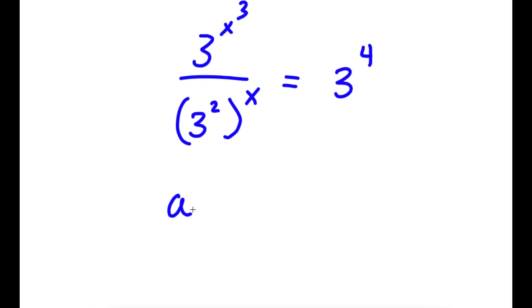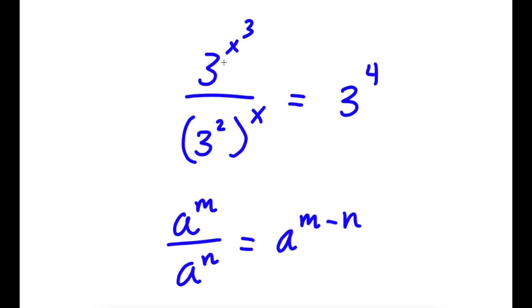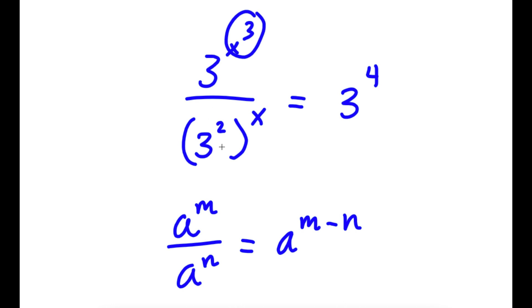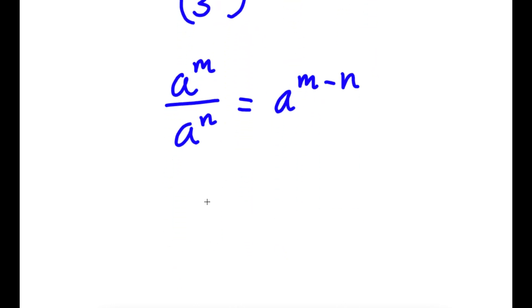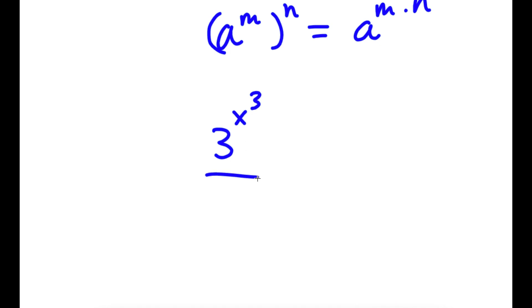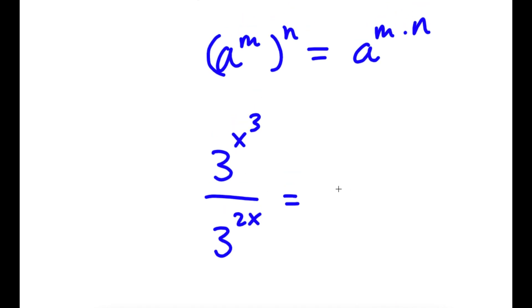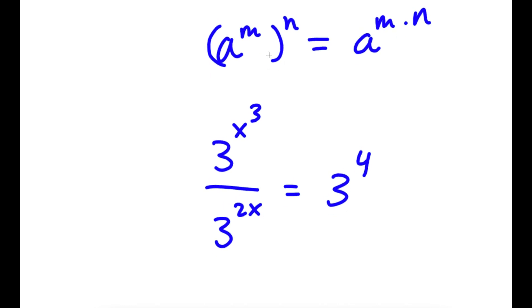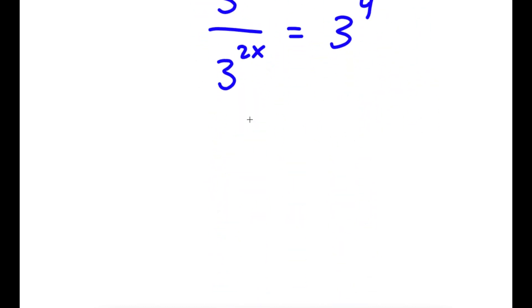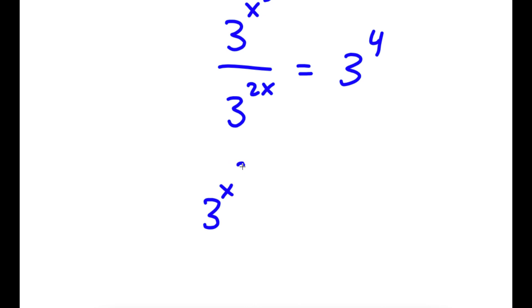Now if I have something in the form a to the power of m over a to the power of n, this is equal to a to the power of m minus n. So I have 3 to the power of x cubed divided by 3 to the power of 2 to the power of x. Now if I have something in the form a to the power of m to the power of n, that's the same thing as a to the power of m times n. So 3 to the power of 2 to the power of x equals 3 to the power of 2x. Using the subtraction rule, this gives 3 to the power of x cubed minus 2x, which is equal to 3 to the power of 4.